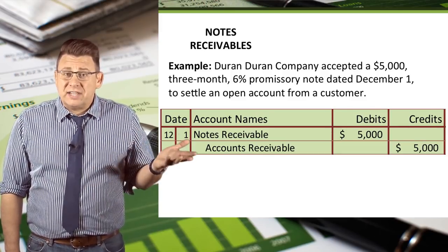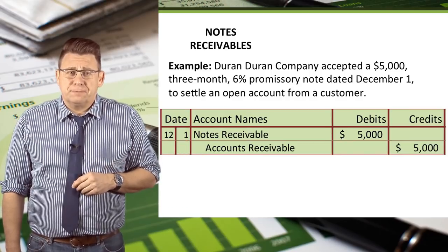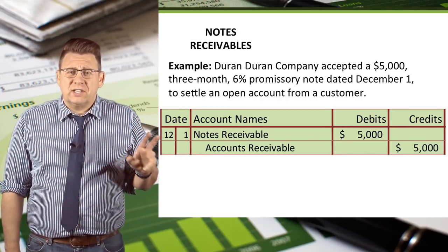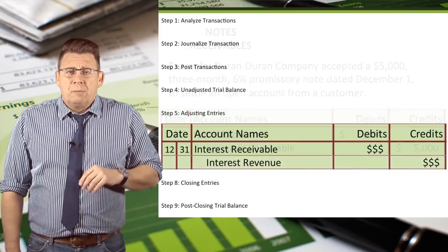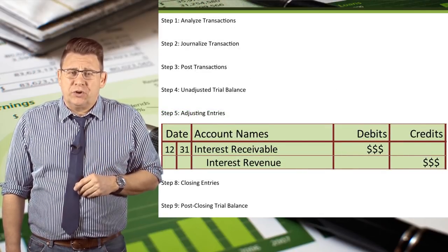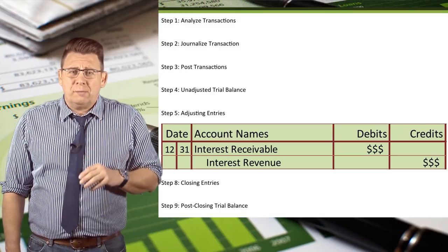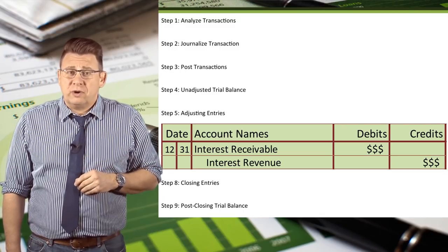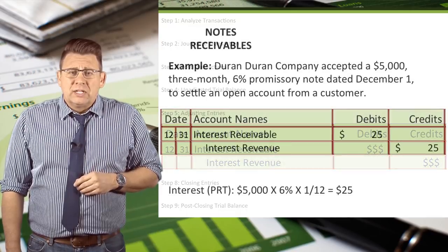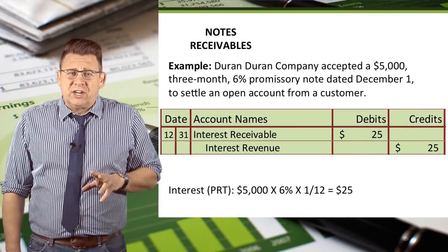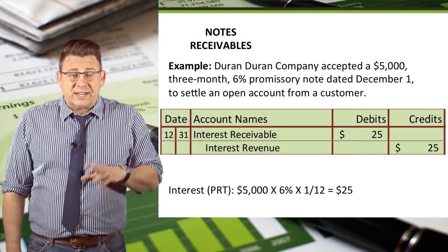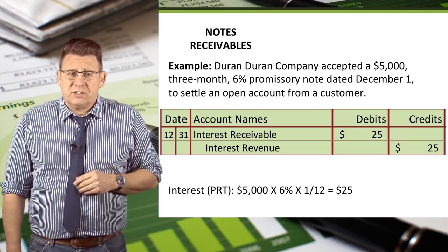How does that change our journal entries? Well, the issuance of the note is still the same. But we have to make an adjusting entry on December 31 to accrue the amount of interest revenue earned during the month of December. The adjusting entry would be for $25, because that's one month of interest.